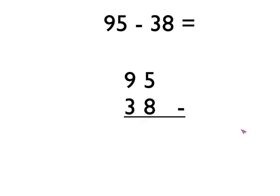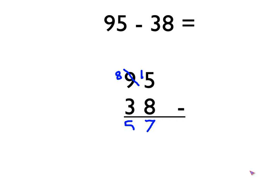So what you have to do if you can't do the column subtraction — for example five take away eight — you have to borrow one from the next column over. In this case you cross out the nine and take one off, which makes that an eight. The one that we're borrowing we put there to turn that number into fifteen. Now you can do fifteen take away eight, that's seven. In the next column we now do eight take away three which is five. So the answer to this one is fifty-seven.